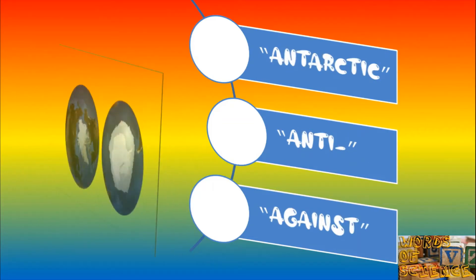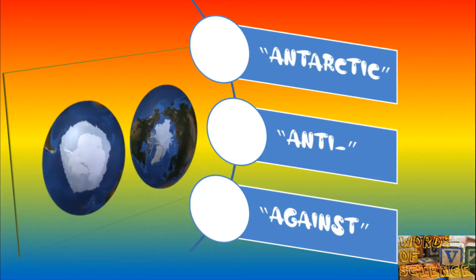Naturally, the southern regions were the Antarctic, from the Greek Anti, meaning against or opposite to. The South, after all, was in the direction opposite to the North.